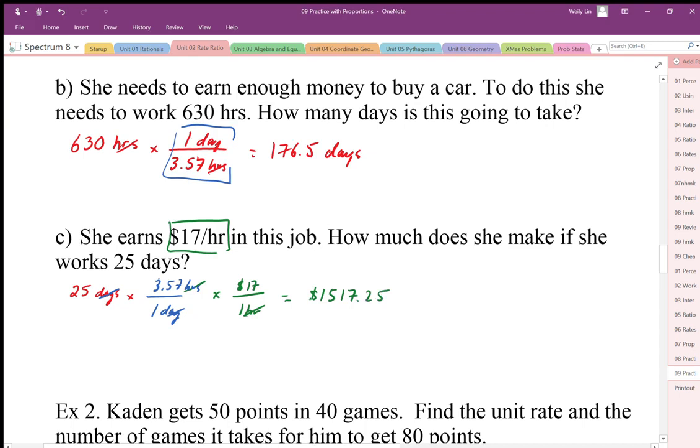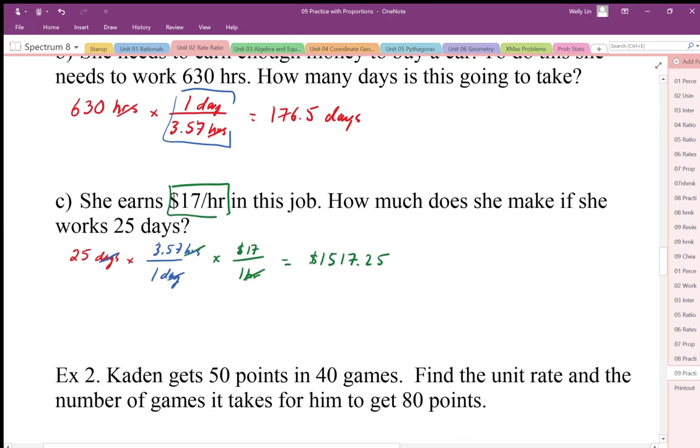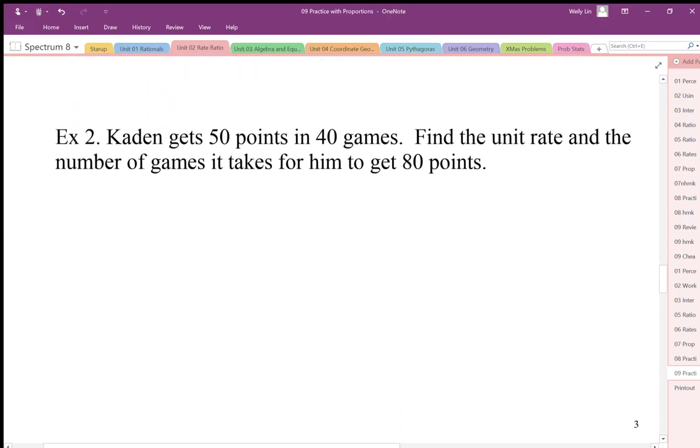Let's take a look at this one here. We have Kaden, he gets 50 points in 40 games. So let's do this as a unit rate and let's figure out how many points per game.